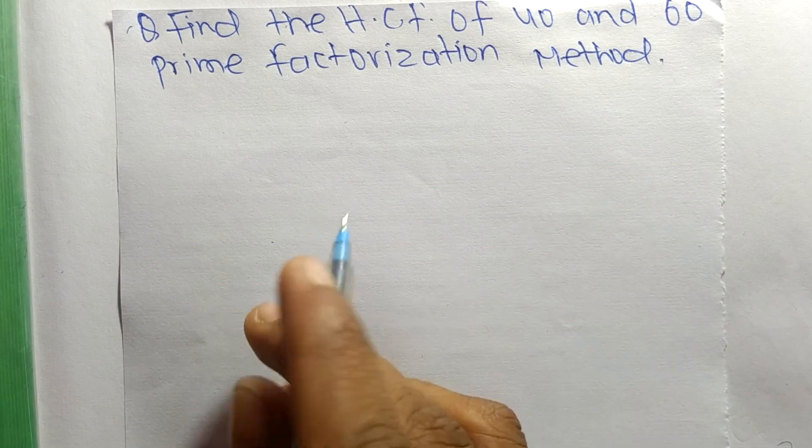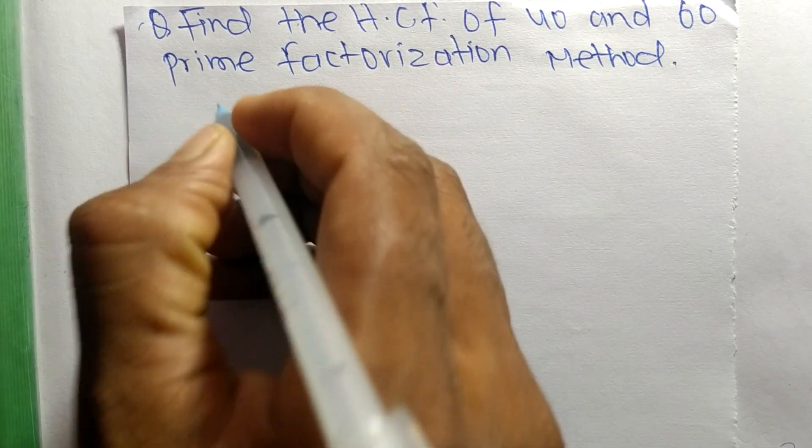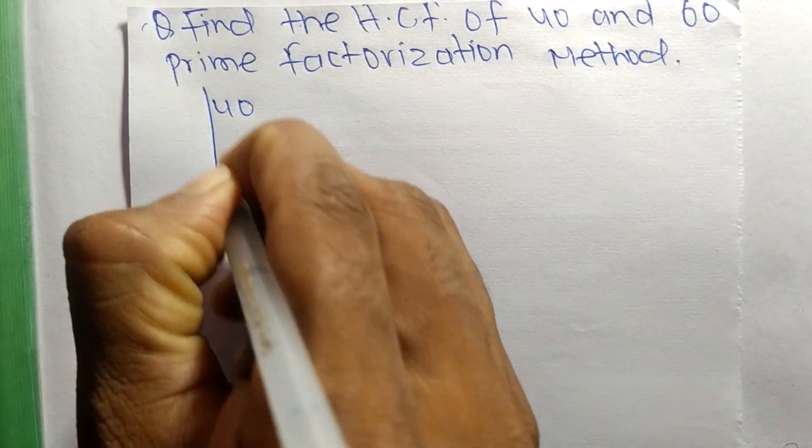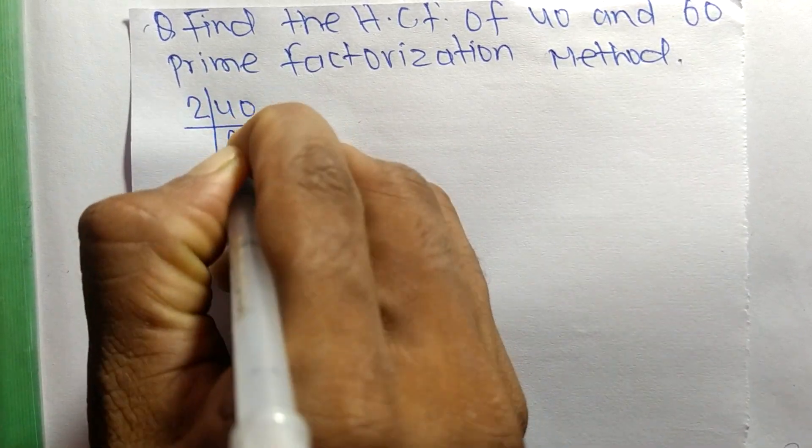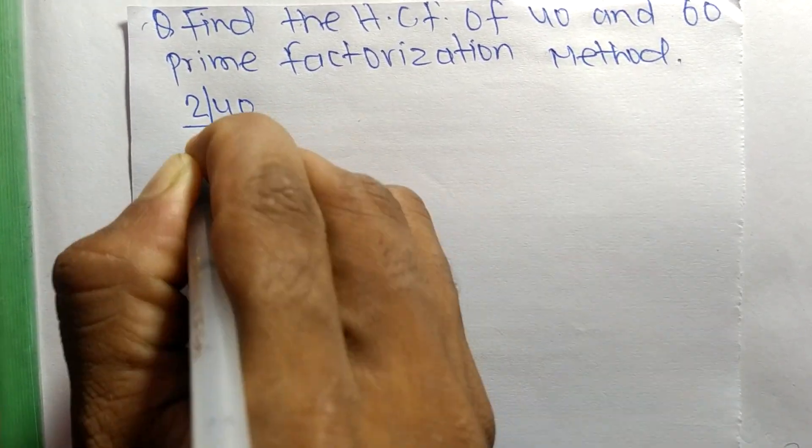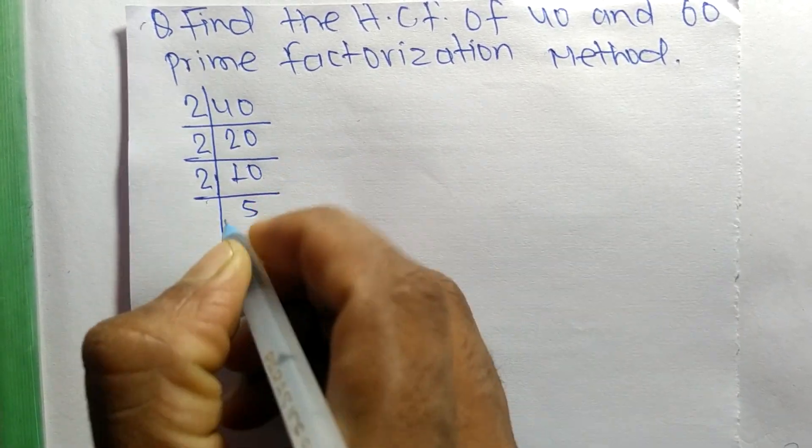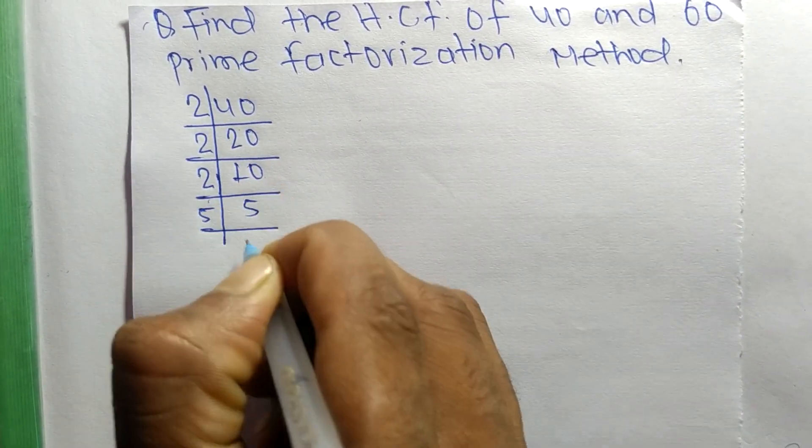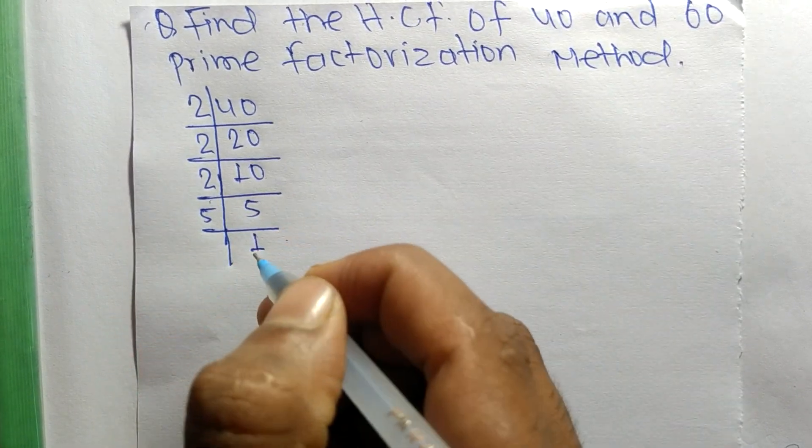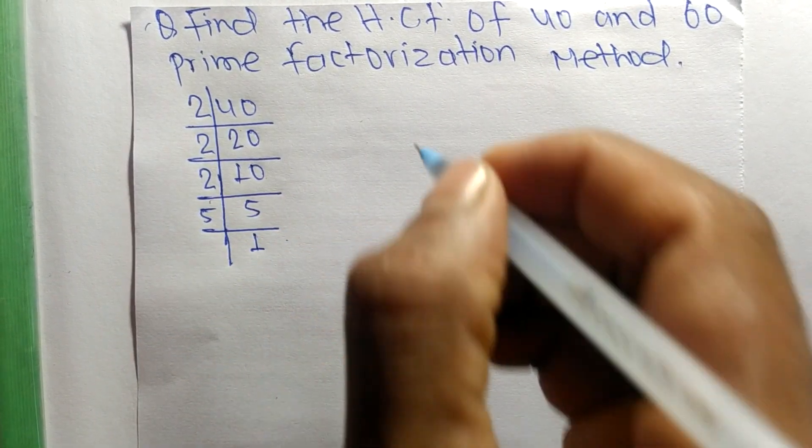First, we find the prime factors of 40. It is 2 times 20 equals 40, 2 times 10 equals 20, 2 times 5 equals 10, and 5 times 1 equals 5.